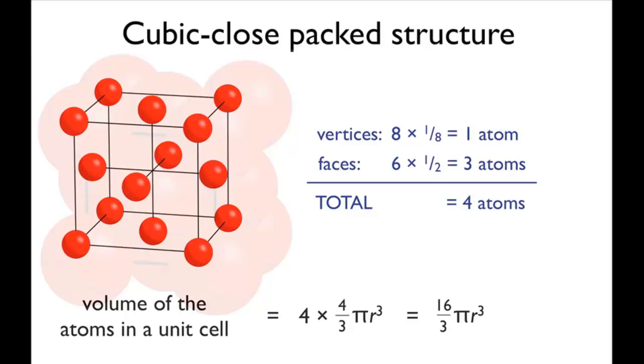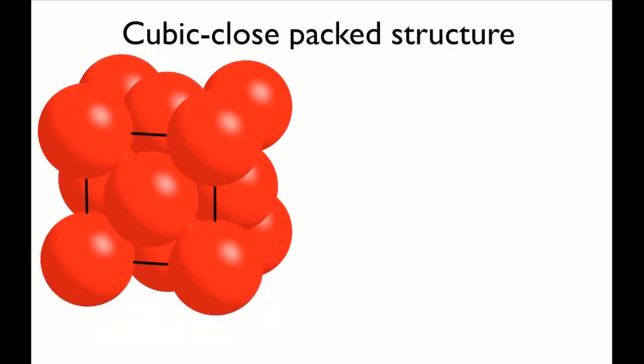Okay, what about the total volume of the unit cell? In a cube, all the sides have equal length, so the volume is equal to l cubed, where l is the length of a side of the unit cell.